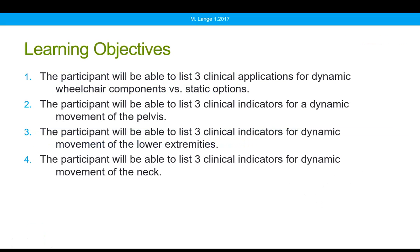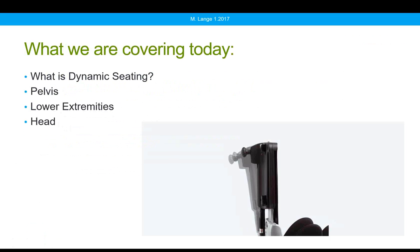Here are our learning objectives for the day. This is a CEU-approved course. If you have any questions at all, we will allow time for those towards the end, but feel free to type a question or comment in the chat box at any time. In this webinar we'll be discussing a definition of dynamic seating, which is defined differently by different groups, and then we'll talk about options and clinical indicators for providing movement at the pelvis, at the knees, and at the neck.